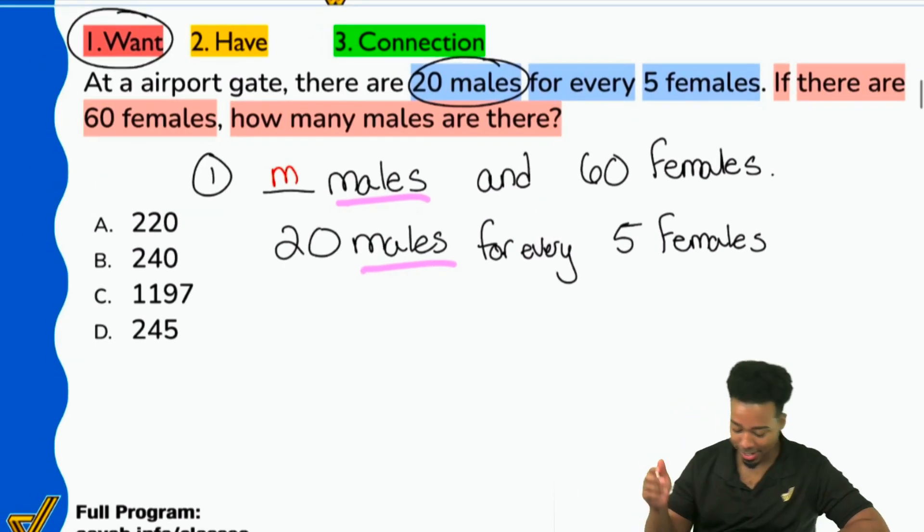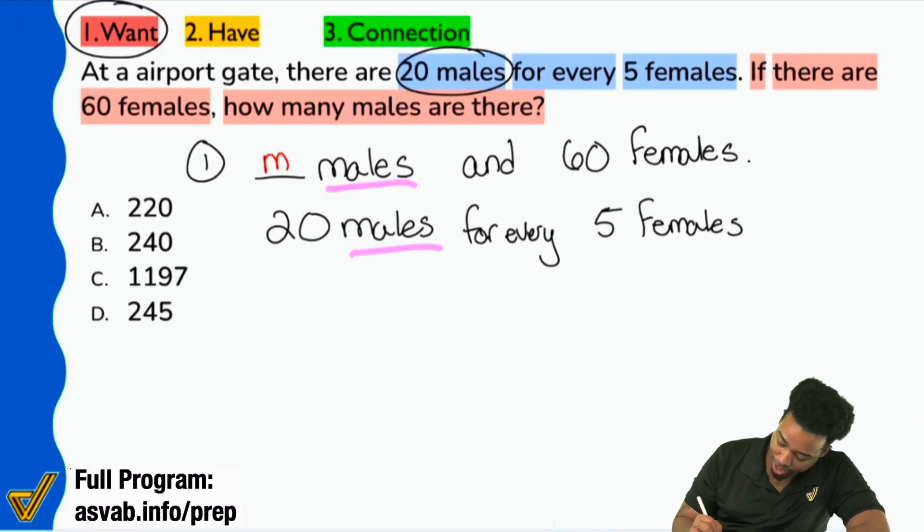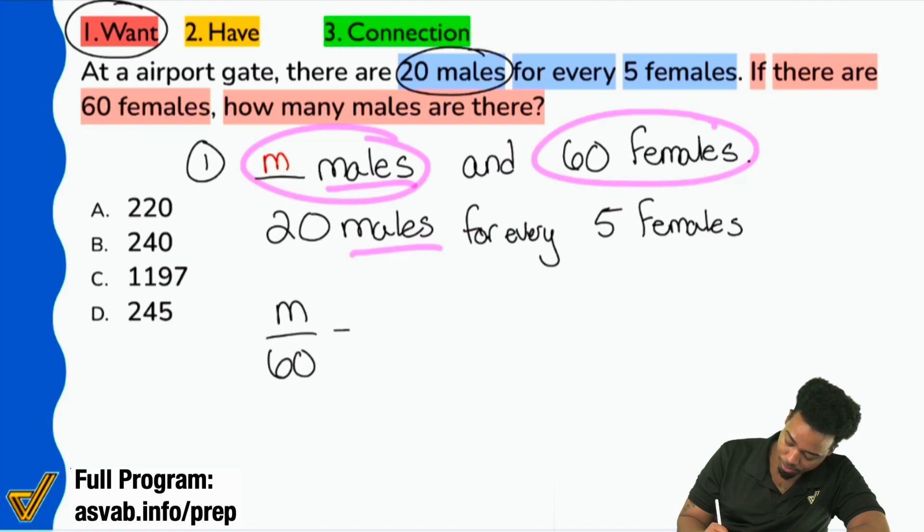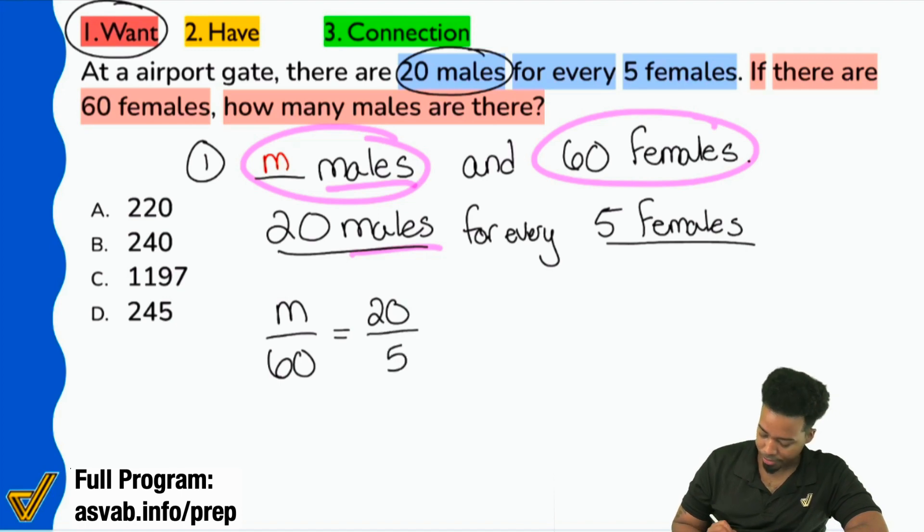So before we continue, does it make sense to you that what we're doing right now is we have successfully compared males and females in the same way now. Males than females. And if we wanted to, we could actually do females to males. No problem there. All right, cool. Sounds good guys. So now we're going to set this up, solve it and be done. Here's the cool thing about it. Let's go. So we're going to go ahead here and say, hey, M males and 60 females. So I'll go M over 60. Again, M over 60 left to right, up to down. You're good. Whatever. Just do the same way on the second try here. So now we're gonna have 20 males and five females. So that'll be 20 over five.